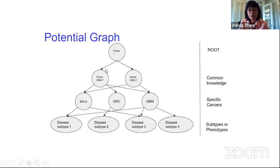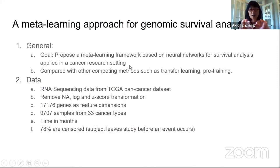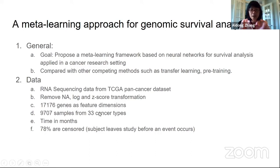We don't have the result yet on this graph-based approach. Basically, this is the meta-learning-based approach for genomic survival analysis. Our goal is to build this meta-learning-based approach for survival analysis using TCGA with all different samples and 33 different cancers, where 78% of the data is censored, and build different graphs based on prior-defined cancer categories using different features.